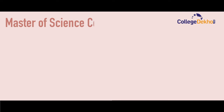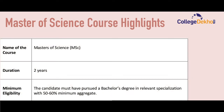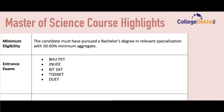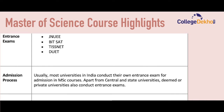Now let's check the Master of Science course highlights. Name of the course: Master of Science (MSc). Duration: two years. Minimum eligibility: the candidate must have pursued a bachelor's degree in a relevant specialization with 50 to 60 percent minimum aggregate. Entrance exams: BHU PET, JNU EE, BITSAT, CSIR NET, DUET.